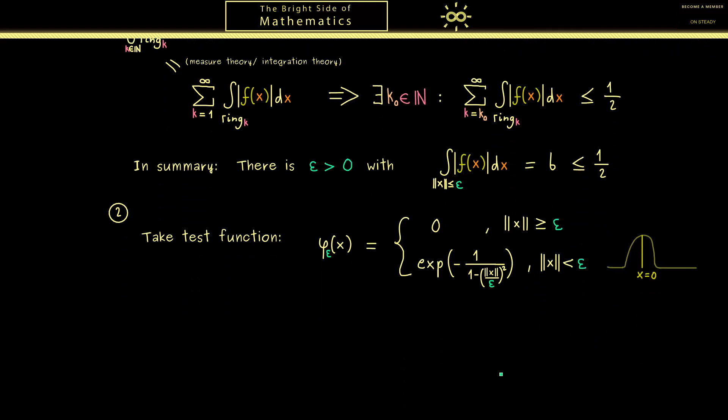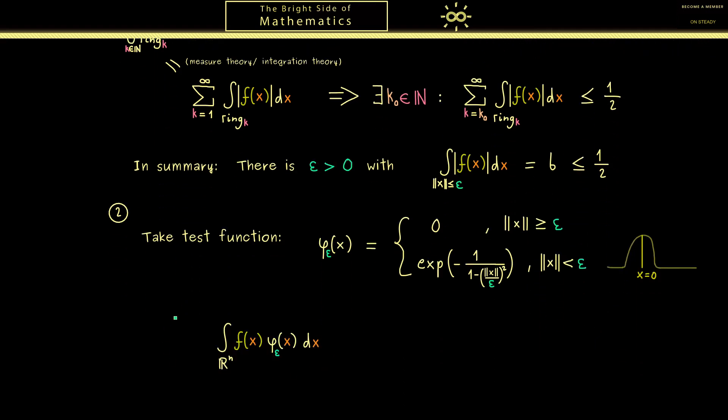Okay then let's calculate with this test function. By assumption this integral here is given by the delta distribution which means it gives us the value of the test function at 0. It's a positive number hence we don't change anything when we use absolute values here. It makes everything easier because we can just apply the triangle inequality for integrals. So now we have the absolute value inside the integral.